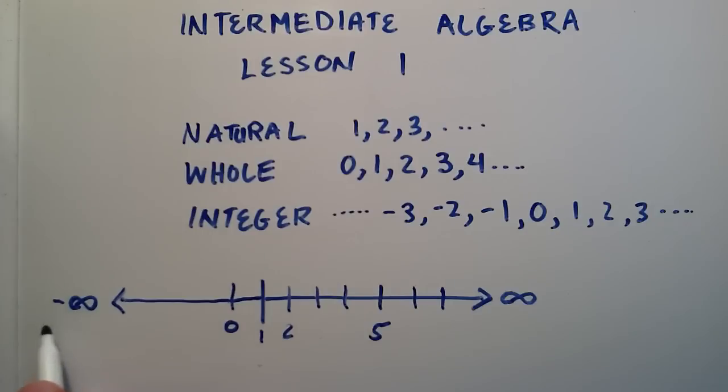Meaning that it goes in the negative direction forever. It doesn't really have an end point, but it just keeps on going. And then we can put our little tick marks here. So this would be negative 1, negative 2, negative 3.